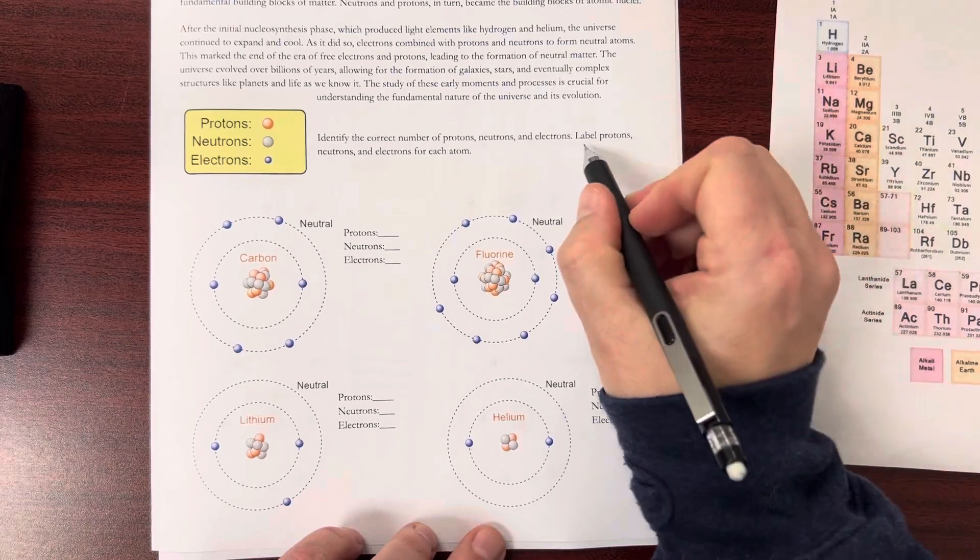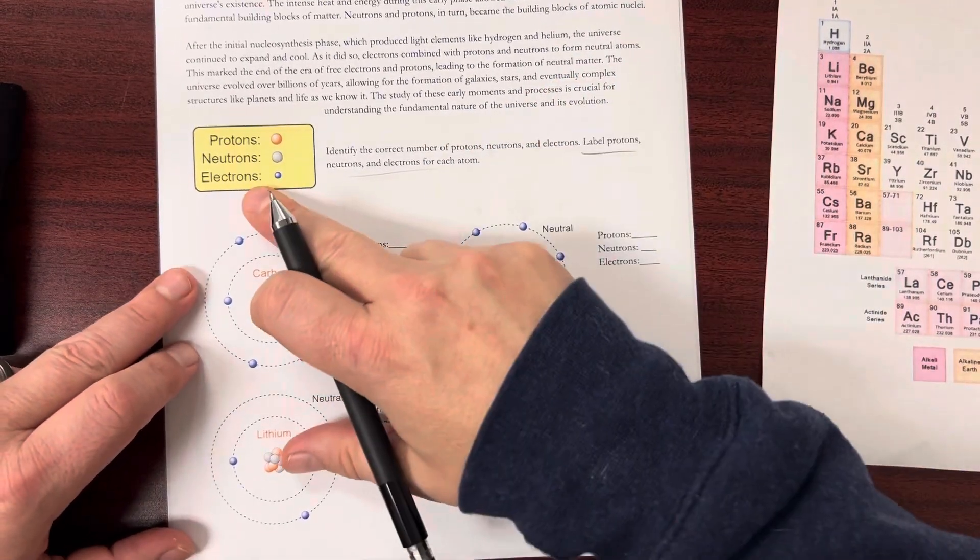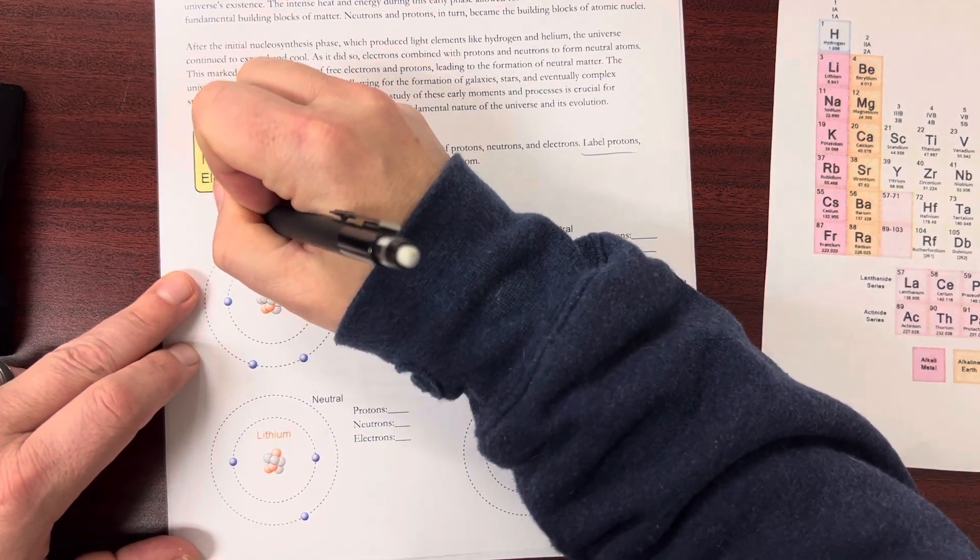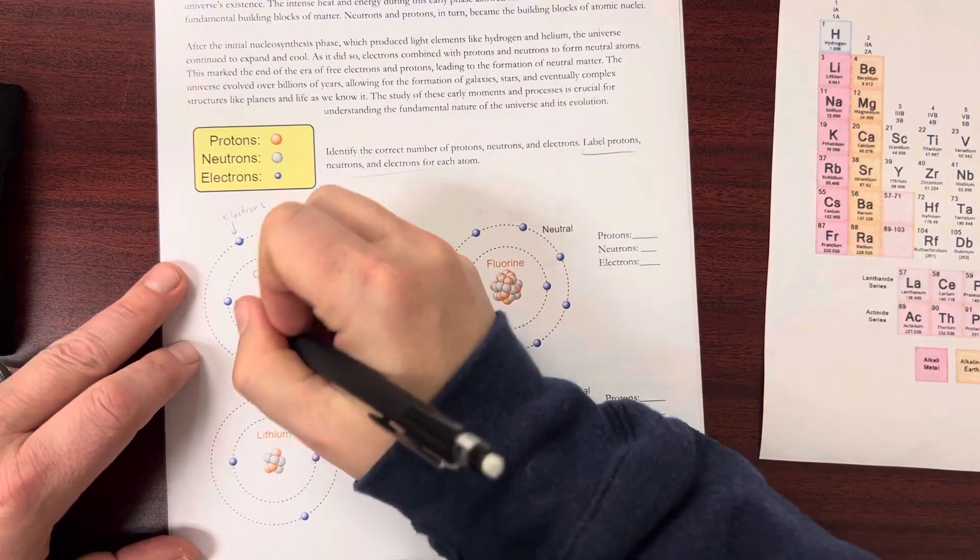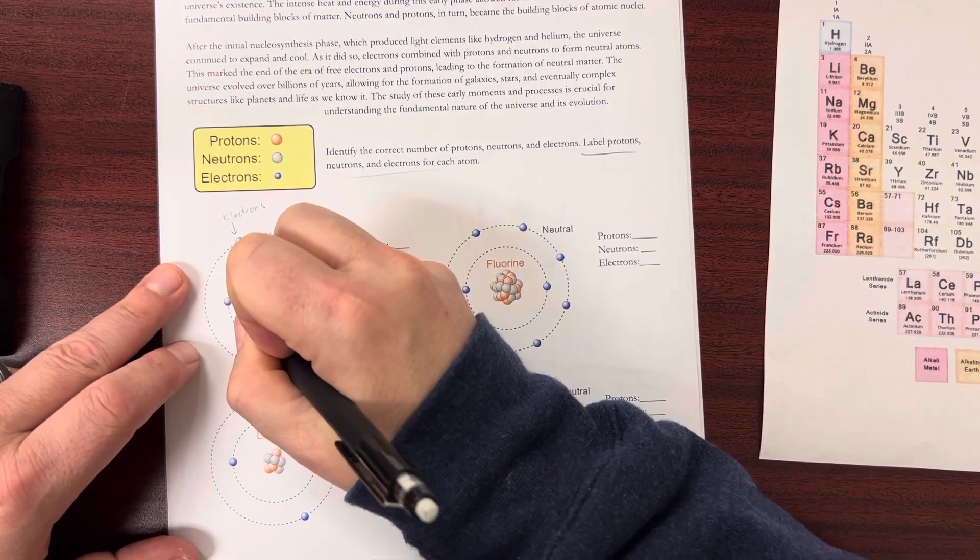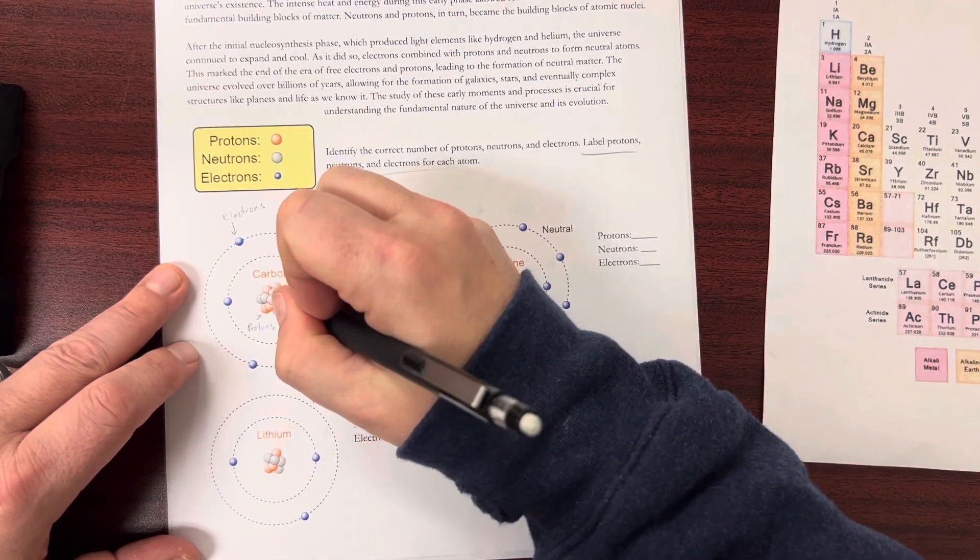But you're also going to label these. So for instance, my electrons here. Electrons. I've got protons. And in the gray I've got neutrons.